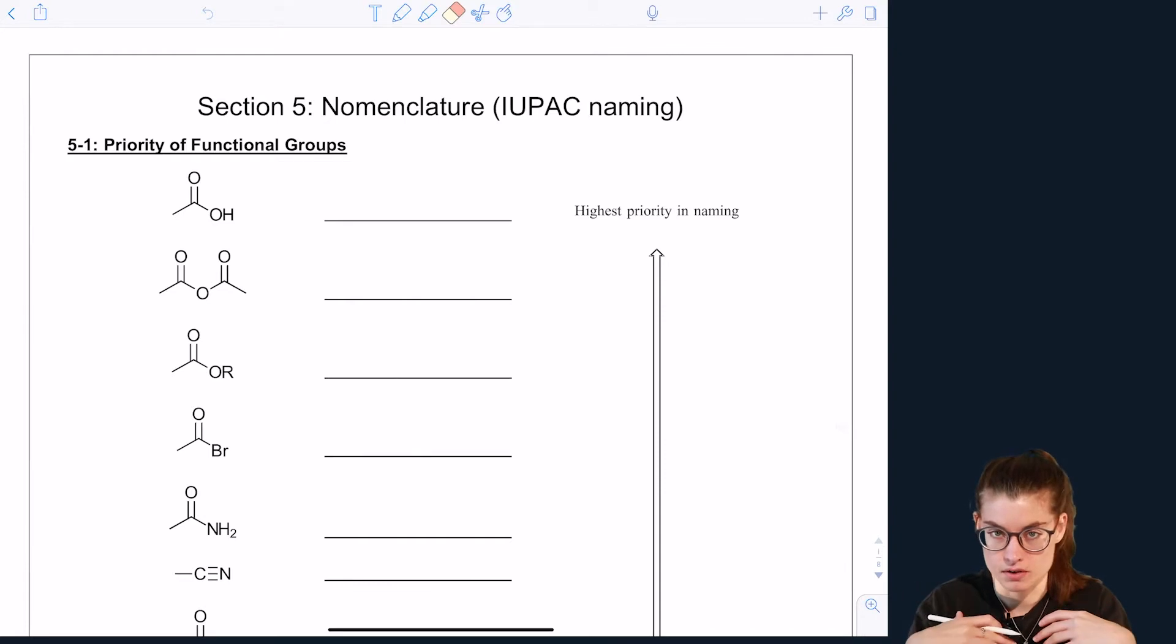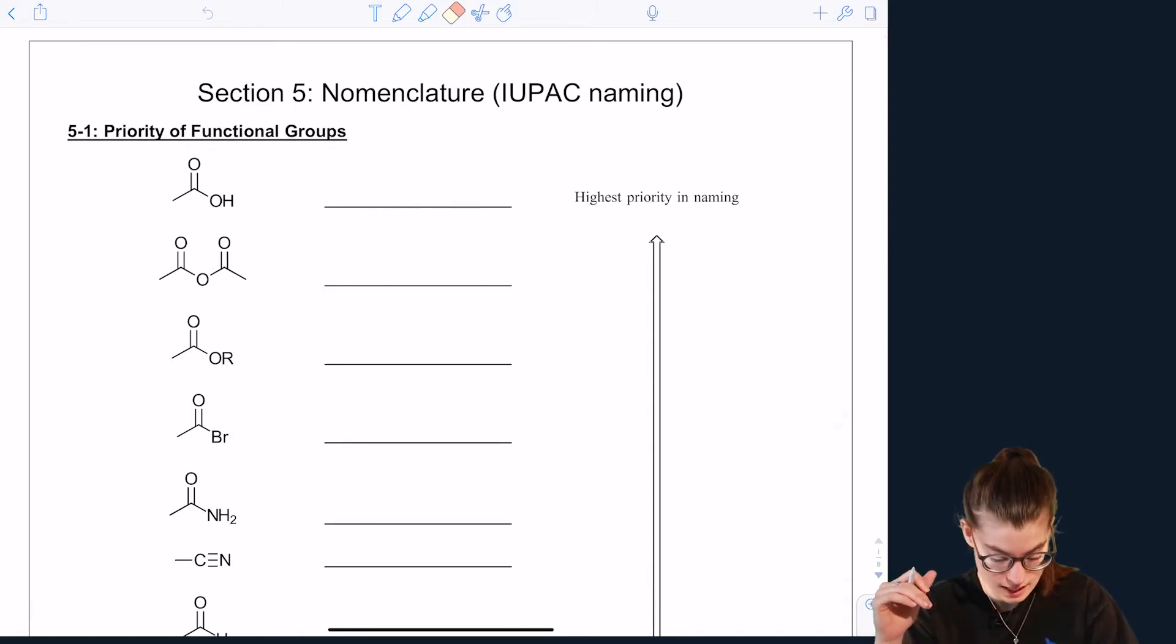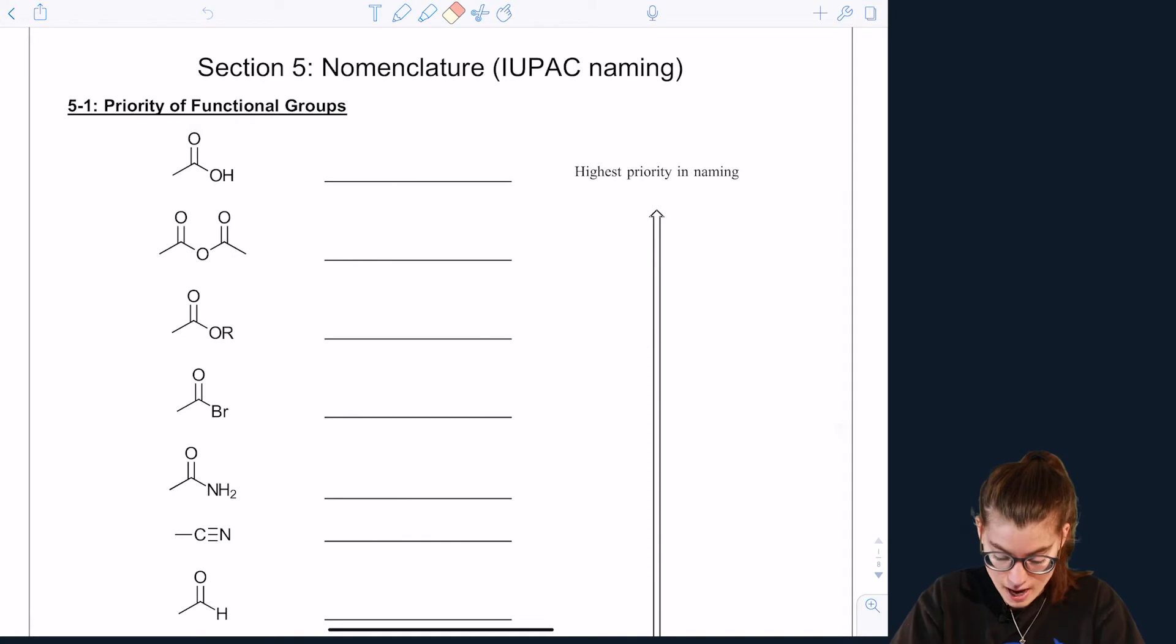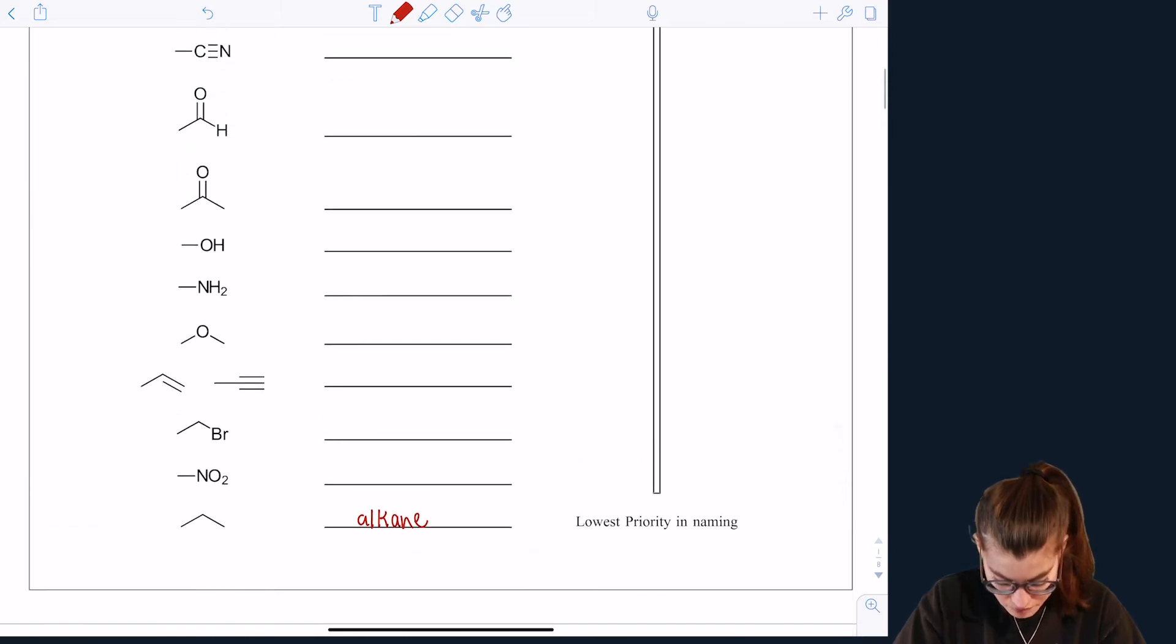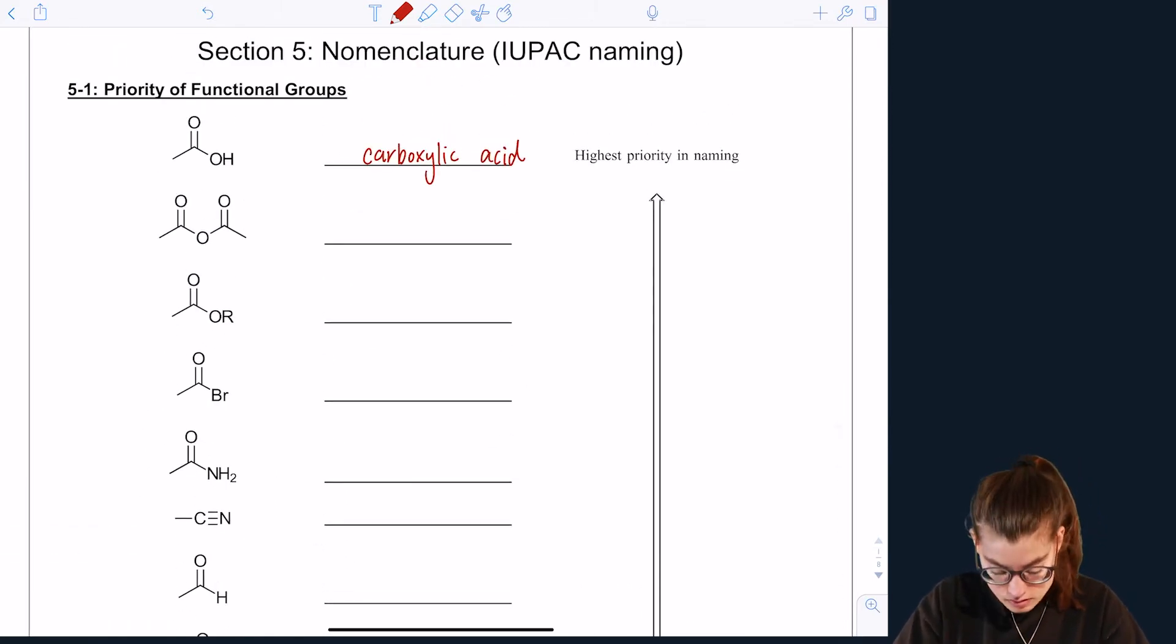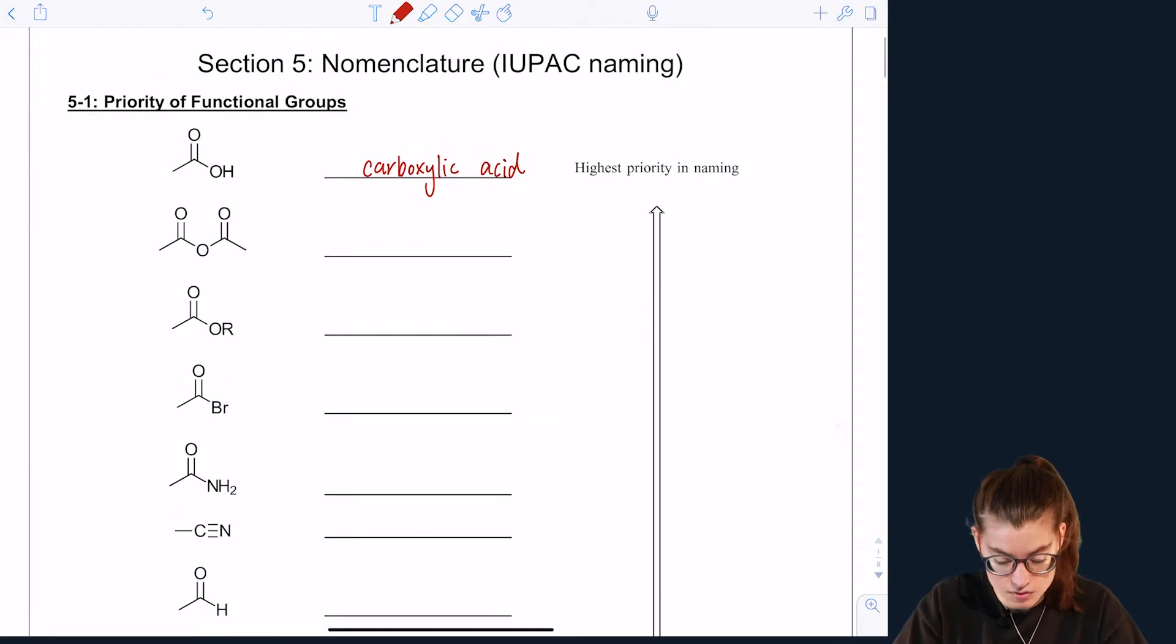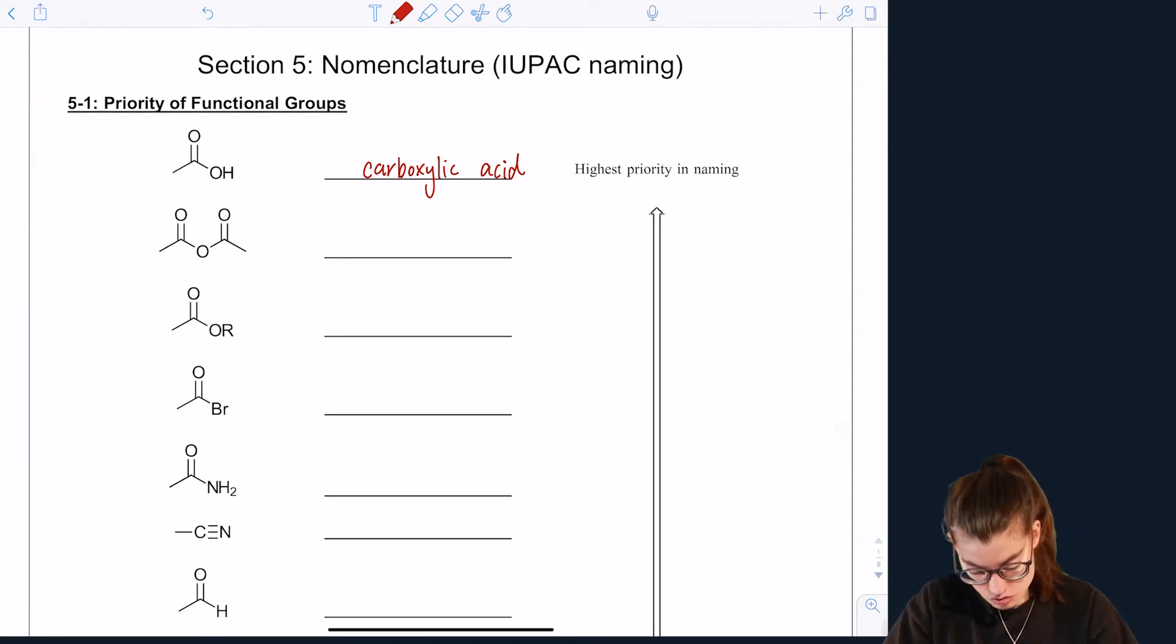But for the rest of the video I want to set up in the beginning a priority list. So that's what you're looking at right now. We have the highest priority at top, which is the carboxylic acid functional group, and we will go down our list all the way down to the alkanes that we have already talked about. And what we're going to do is after we list the priorities, then we will go through how to name each of these functional groups.